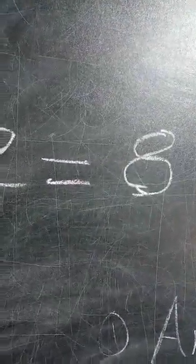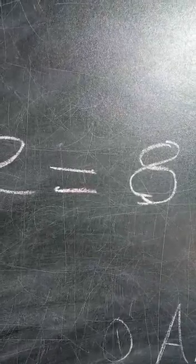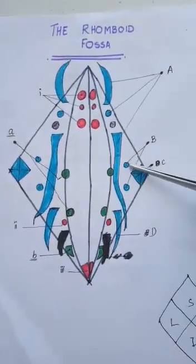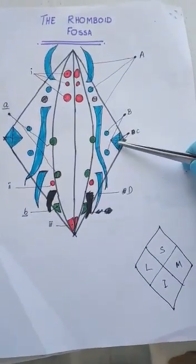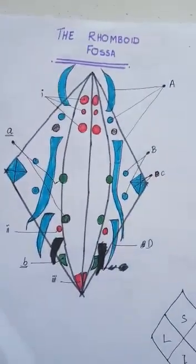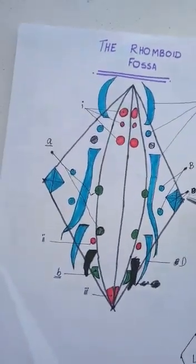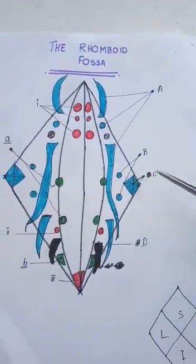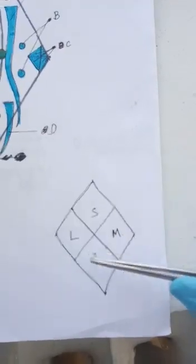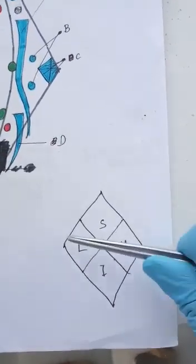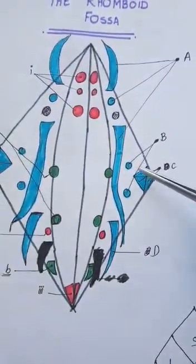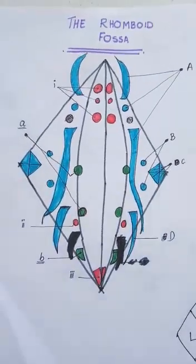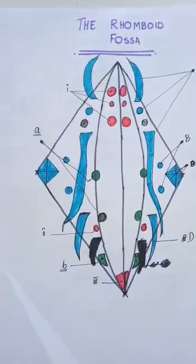The eighth cranial nerve is known as the vestibulocochlear nerve, and we divide it into two. The vestibular part has four regions: superior, inferior, medial, and lateral nucleus. The cochlear part has two nuclei: anterior and posterior. Then we jump to the next one, the solitary nucleus.